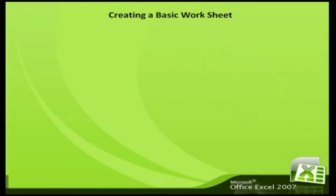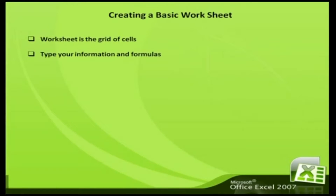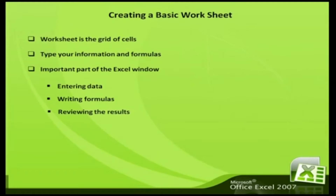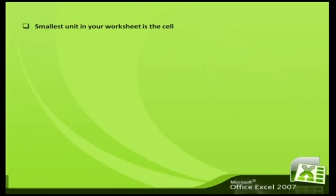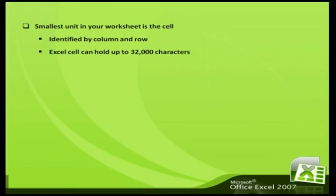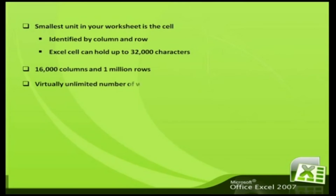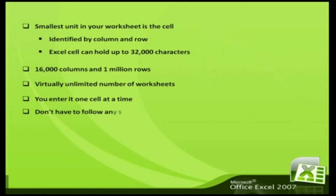Creating a basic worksheet. A worksheet is the grid of cells where you type your information and formulas. This grid is the most important part of the Excel window, where you will perform all your work such as entering data, writing formulas and reviewing the results. The grid divides your worksheet into rows and columns. The smallest unit is the cell, and cells are identified by columns and rows. An Excel cell can hold up to 32,000 characters. A worksheet can span 16,000 columns and 1 million rows, and every spreadsheet file can hold a virtually unlimited number of worksheets. When you enter information, you enter it one cell at a time, and you do not have to follow any set order.